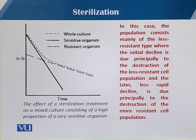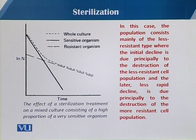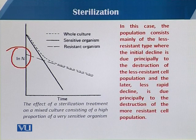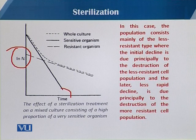In this graph you can easily see there are three different lines — one is a dotted line, another is a solid line, and the third shows the resistant organism. In the first case, when we plot ln N versus time t, the whole culture basically shows the average of those.